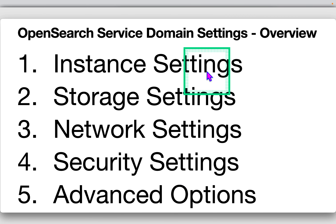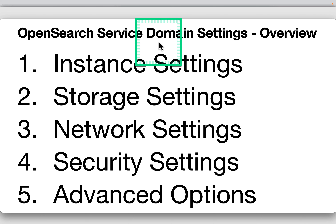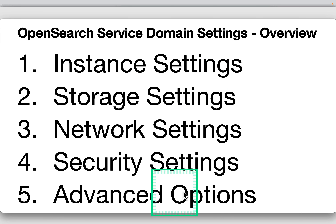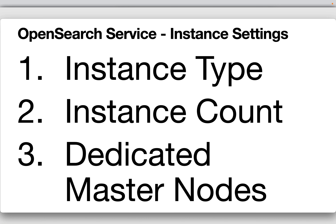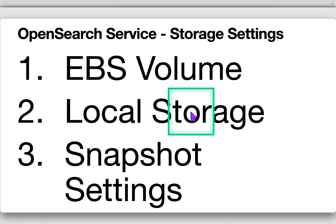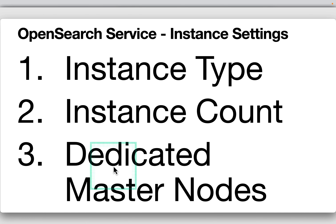An OpenSearch domain is essentially a cluster — a shared set of settings and configurations. When creating a domain, there are several settings categories. For instance settings, you choose an instance type such as t2.small.elasticsearch or m5.large.elasticsearch, set the instance count (number of data nodes, which influences scalability), and optionally configure dedicated master nodes — recommended for clusters with more than 10 data nodes.